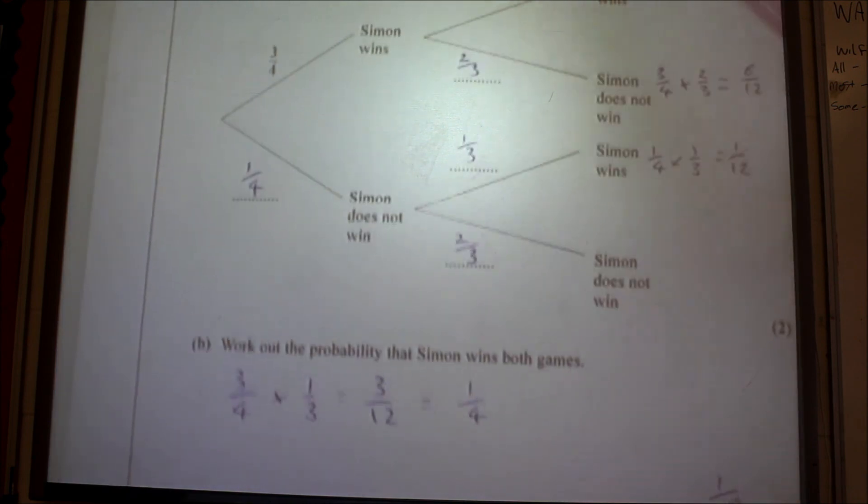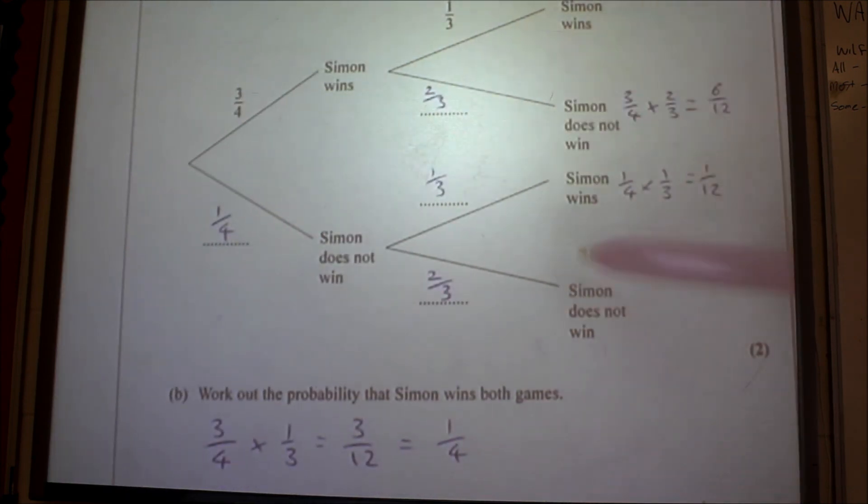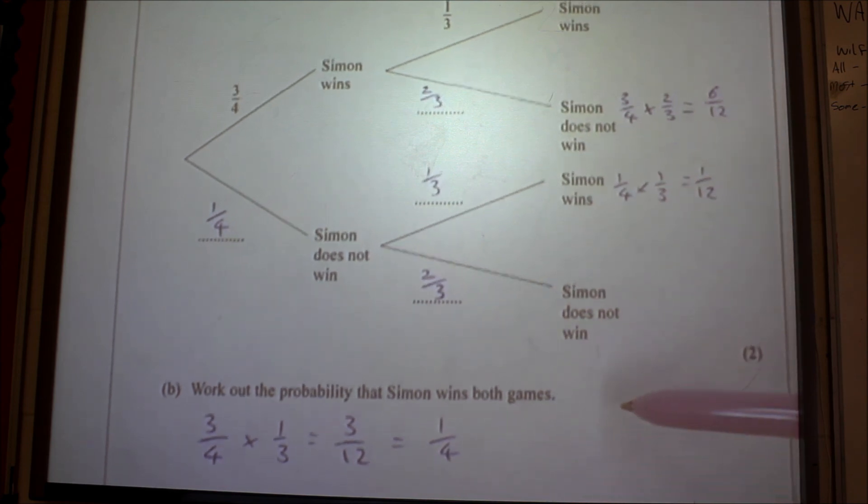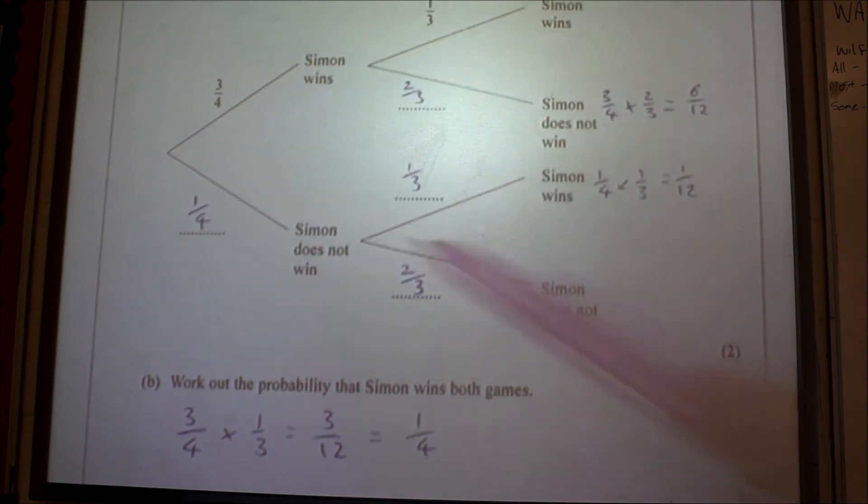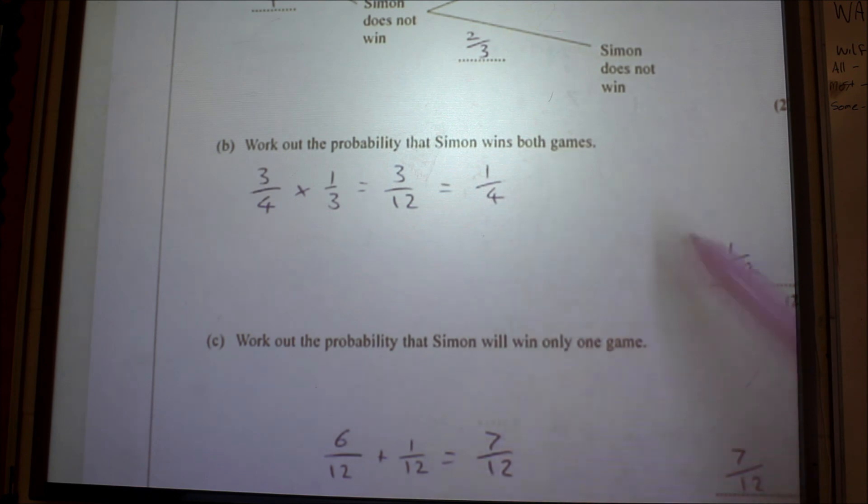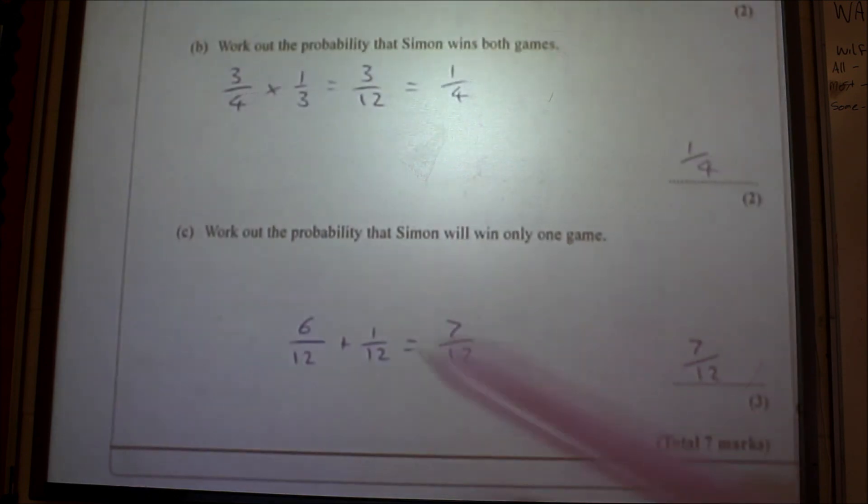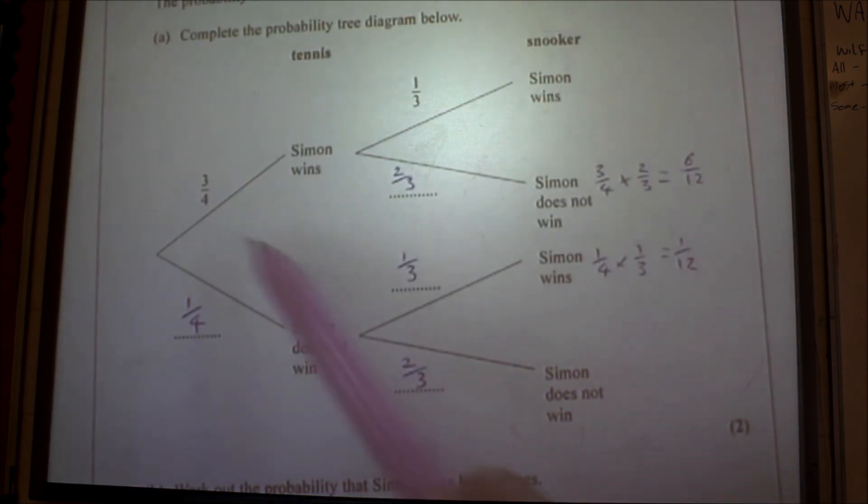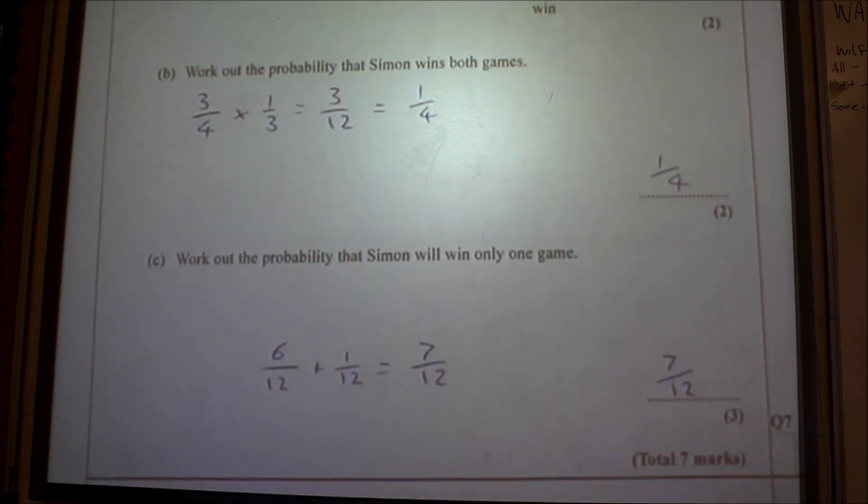Question number seven, last one here. Simon plays a game of tennis and a game of snooker. Fill in your things. Work out the probability that he wins both games. Simon win and a win, so it's three quarters times one third, which is a quarter. And work out the probability that he'll win only one game. You want a win and a lose, or a lose and a win. We'll come out here: six twelfths and one twelfth is seven twelfths. And that is your questions on probability trees.